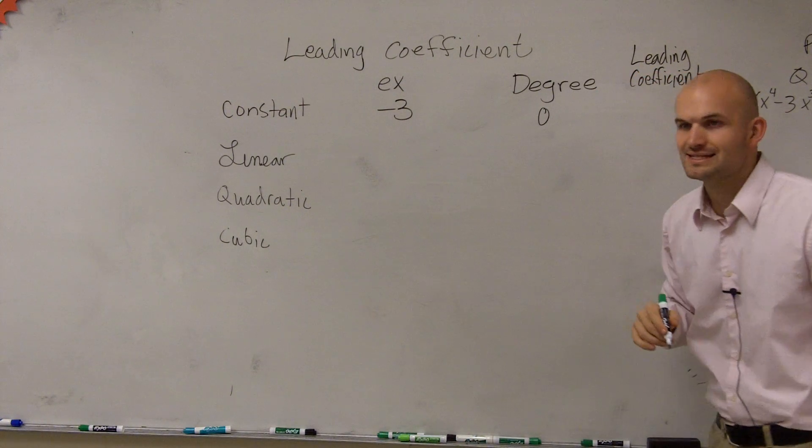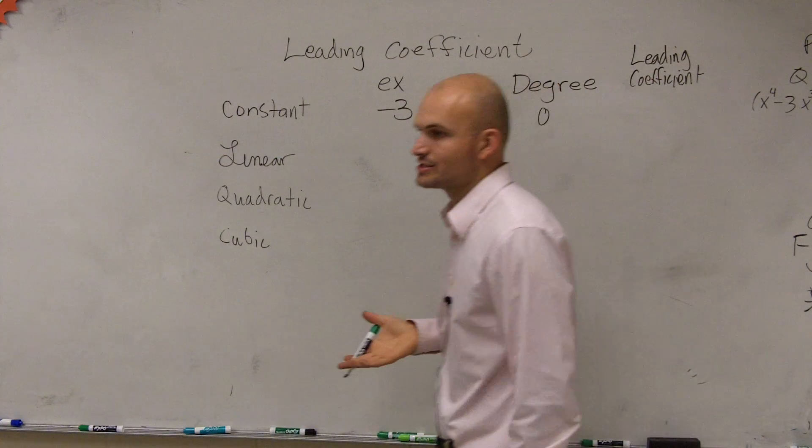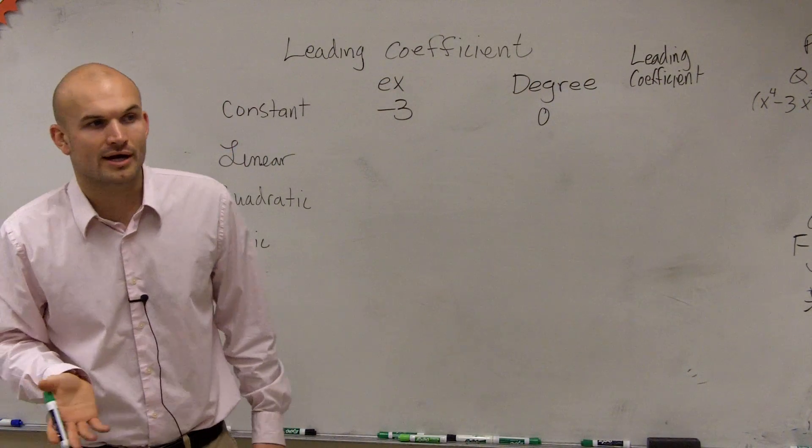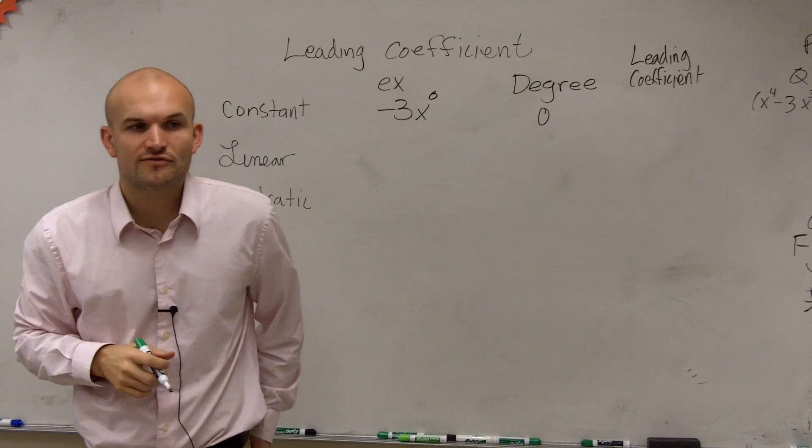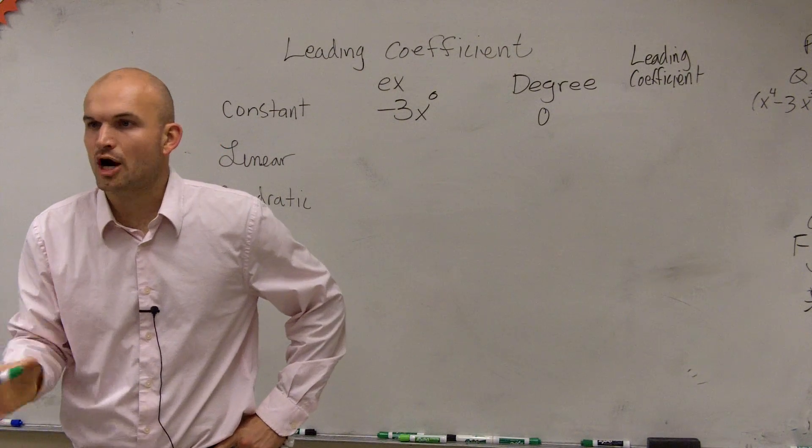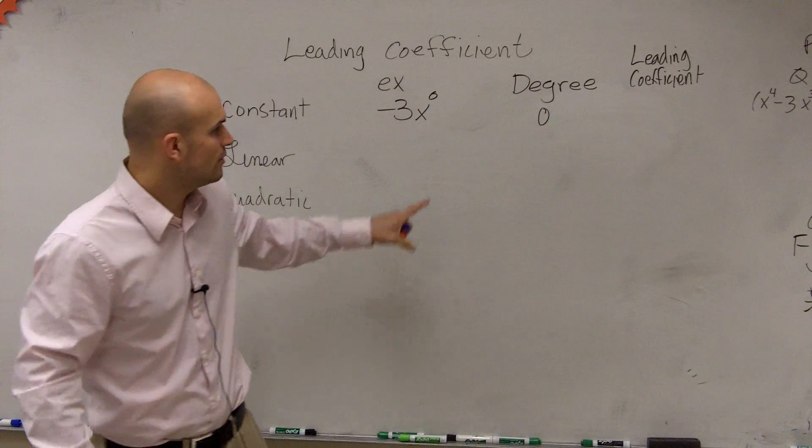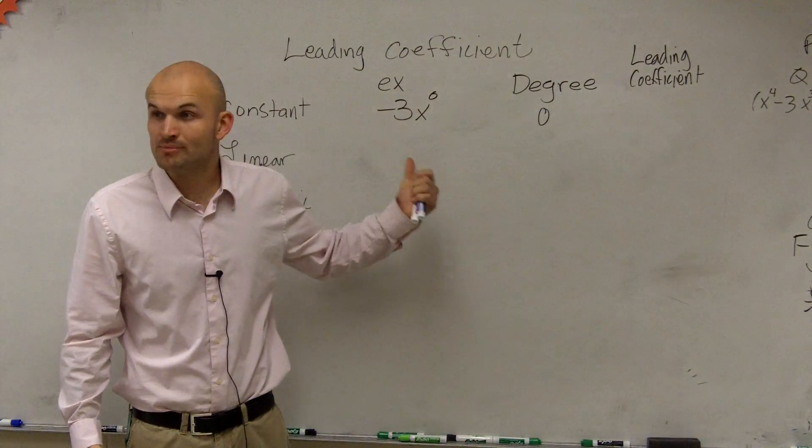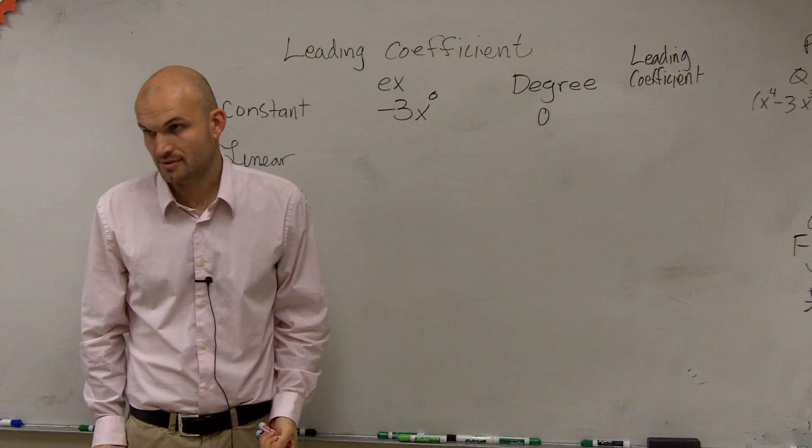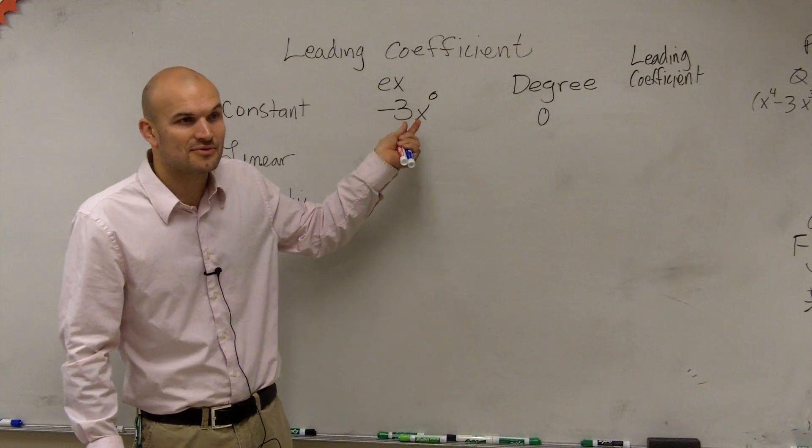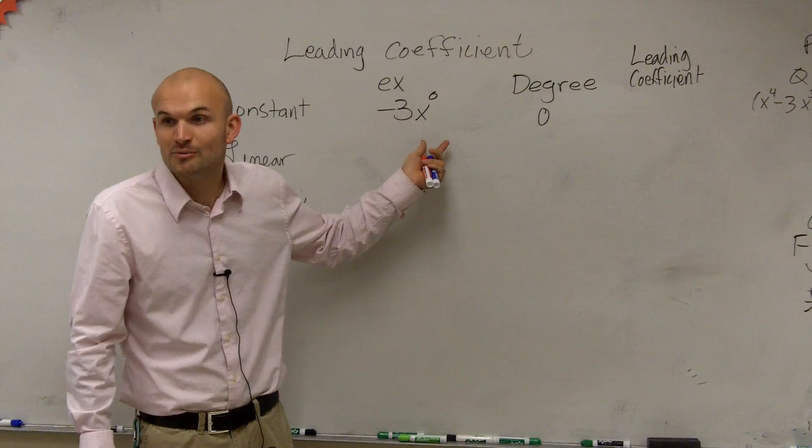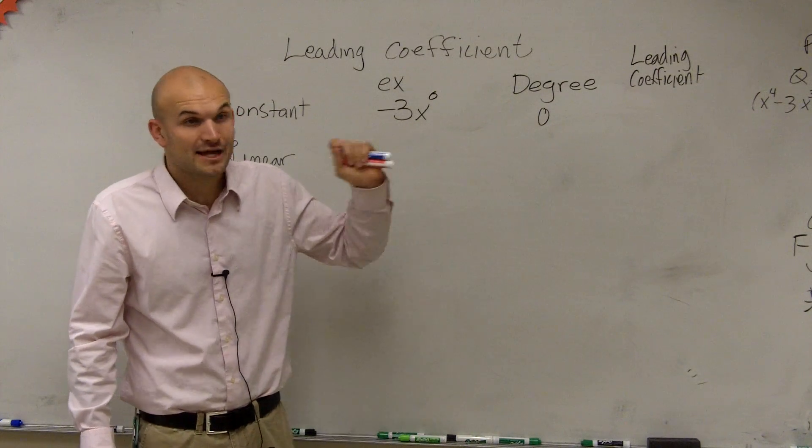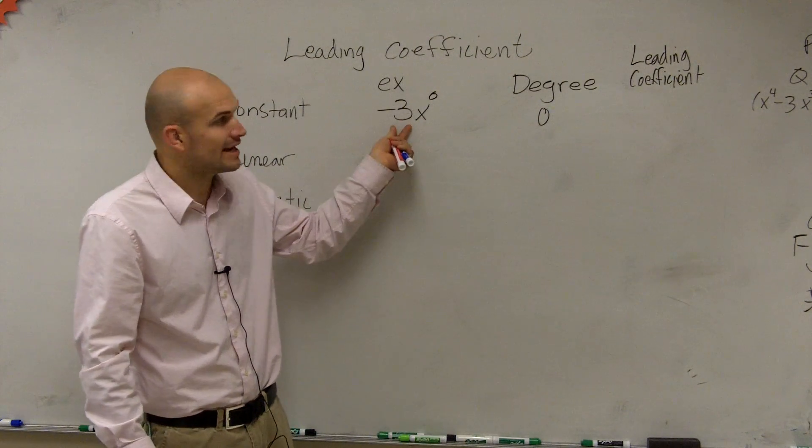And then, the next thing that we're going to learn about is called the leading coefficient. Now, for the constant, since the leading coefficient is our only term, let's actually write this back in there. Here, our leading coefficient is going to be our term that is the coefficient of our monomial with the largest degree. So, therefore, since negative three x to the zero is our only monomial, it's our monomial with the largest degree.